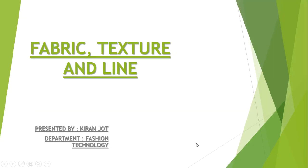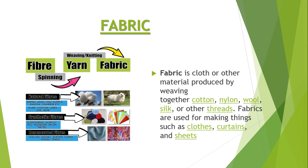Hello everyone. Today's topic is fabric, texture, and line from the subject of elements of fashion. This topic is for first meso students. Fabric is a cloth or other material produced by weaving together cotton, nylon, wool, silk, or other threads. Fabric is used for making things such as clothes, curtains, and sheets.